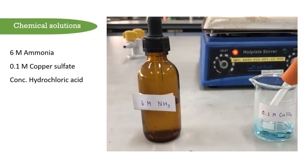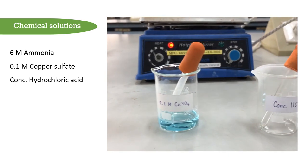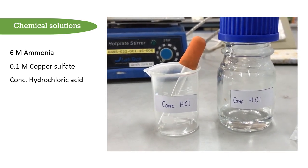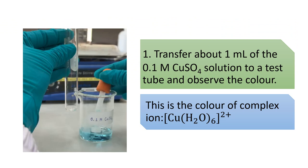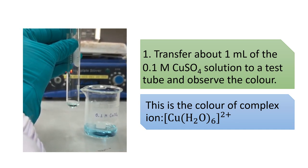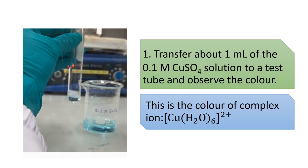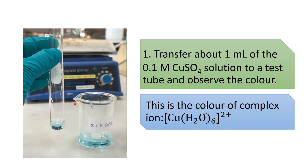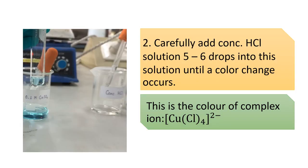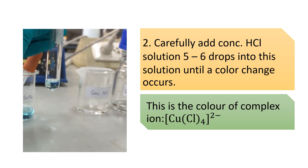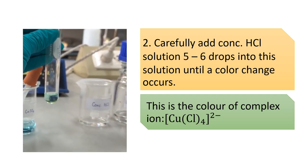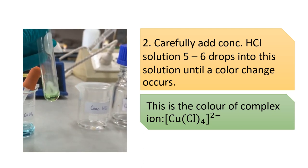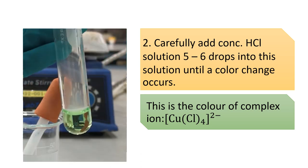For Part One, the solutions used in this experiment are ammonia, copper sulfate, and concentrated hydrochloric acid. Step one: transfer one milliliter of copper sulfate solution to a test tube and observe the color — this is the color of the complex hexa-aqua copper(II) ion. Step two: carefully add a few drops of concentrated hydrochloric acid into the solution and observe the color change — this is the color of the complex ion tetrachlorocuprate(II).